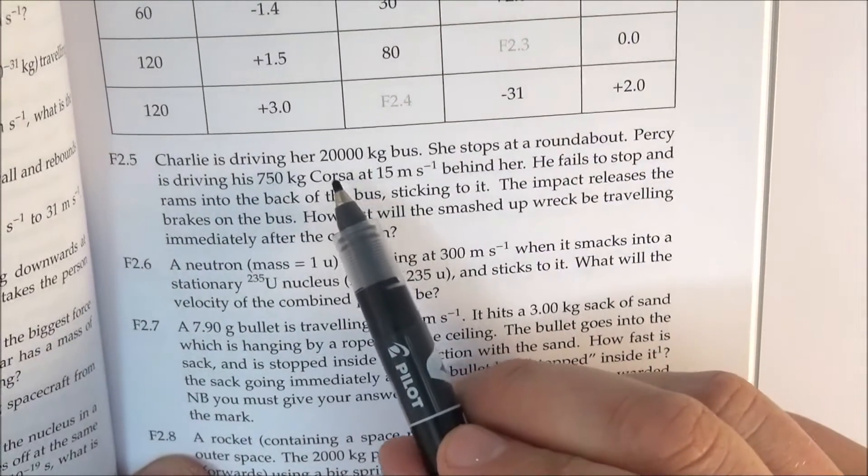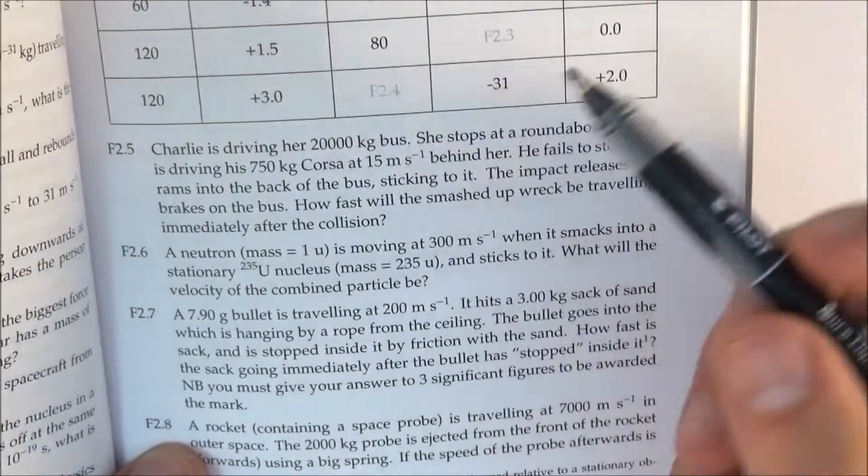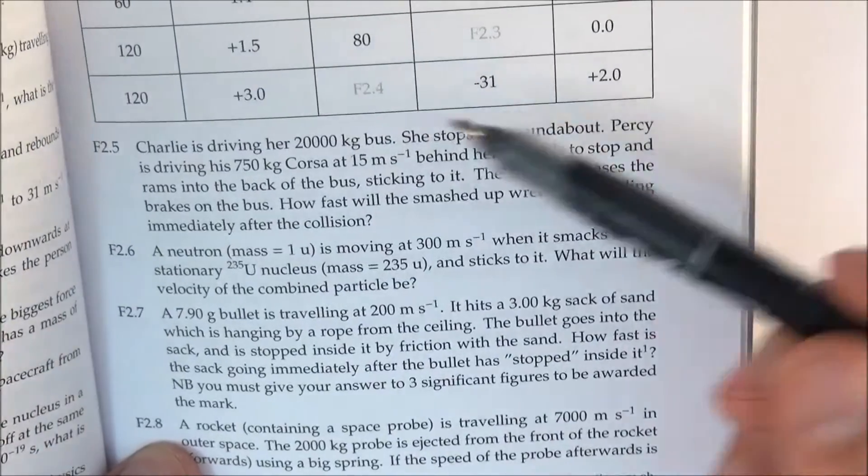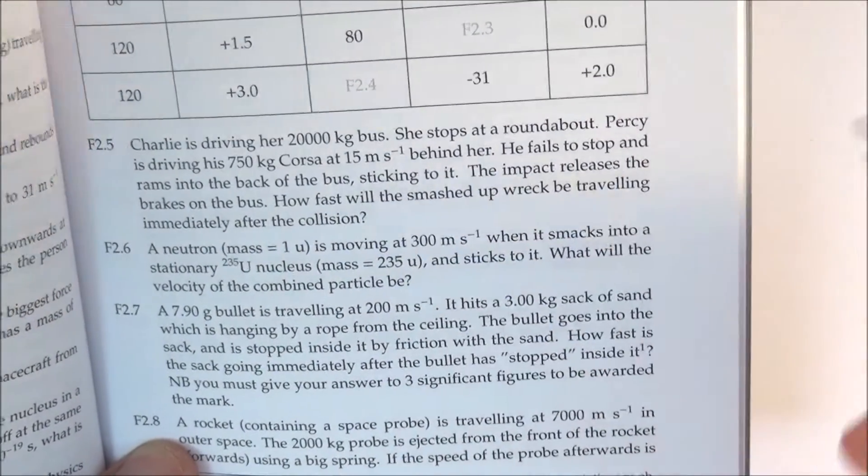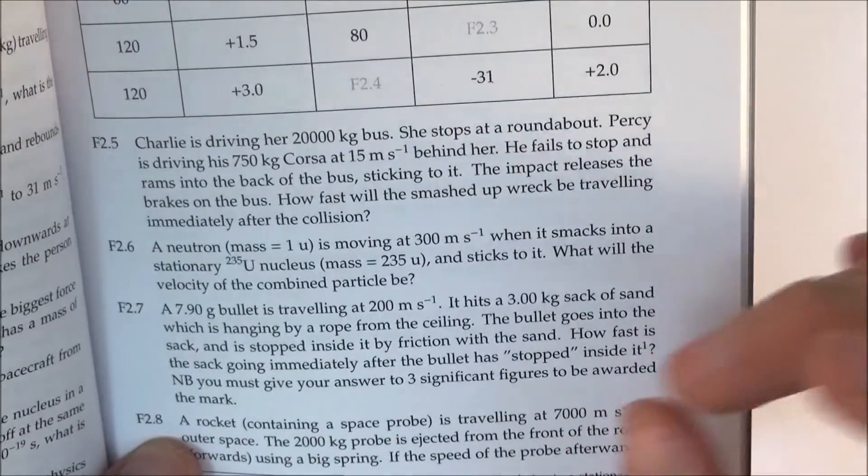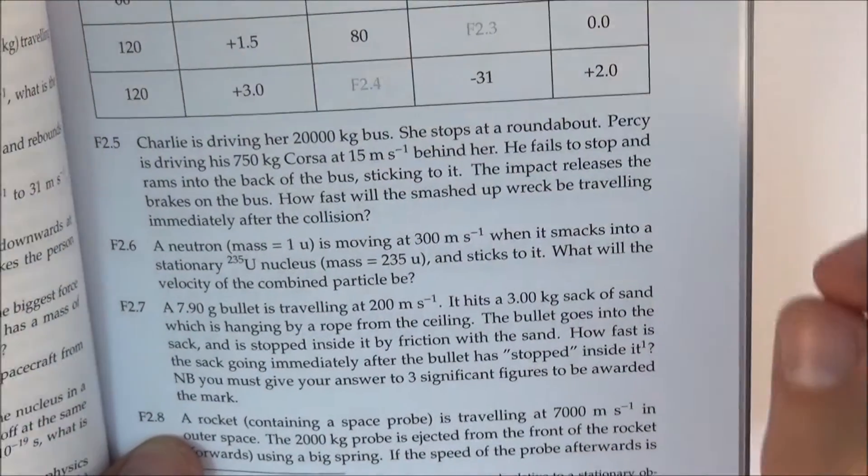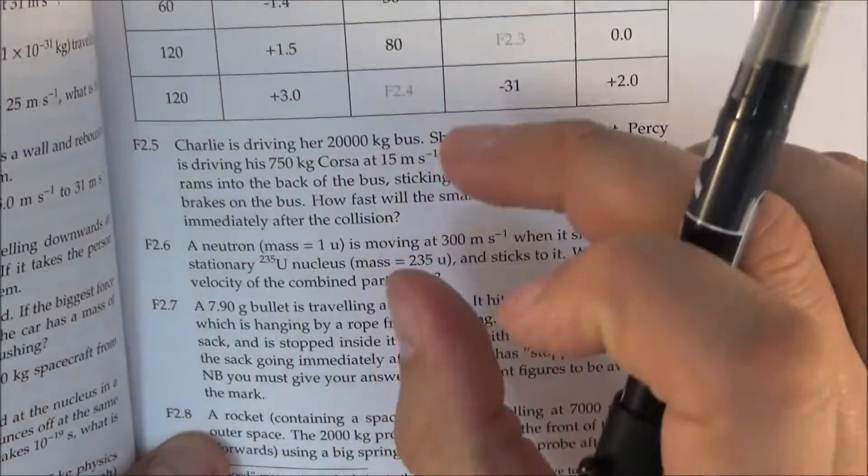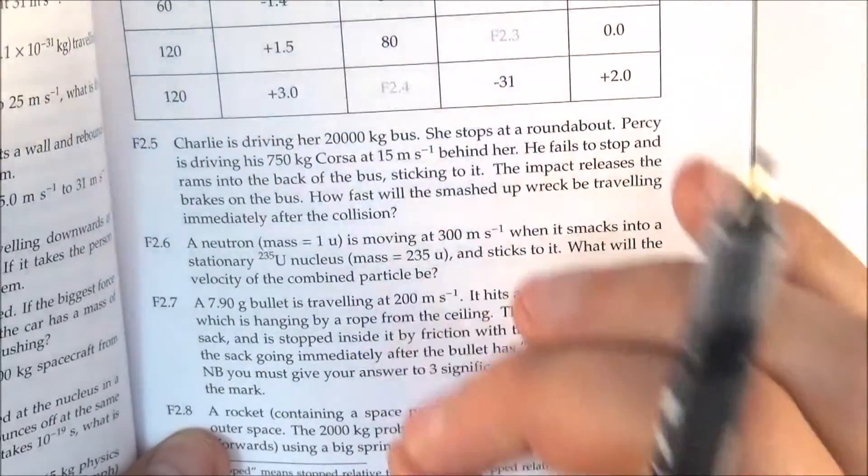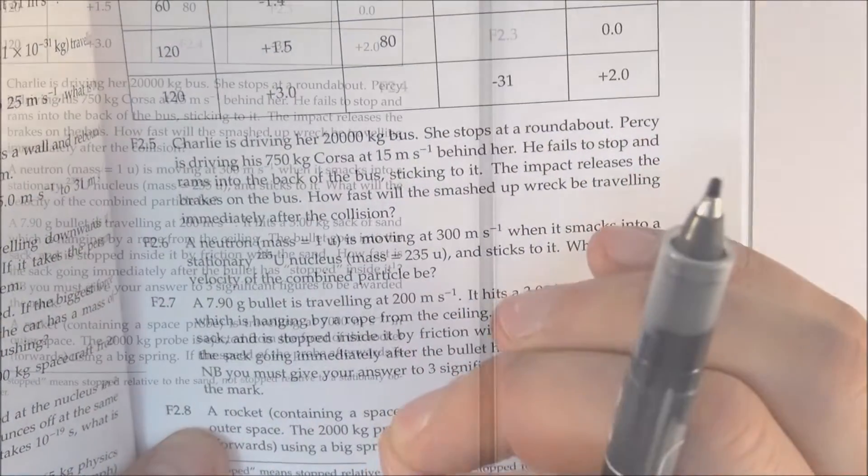It's about Charlie driving her 20,000 kilogram bus. She stops at a roundabout. Percy is driving his 750 kilogram car at 15 meters per second. They have an impact and then the two things move off together. So how fast will the smashed up wreck be traveling after the collision? A very simple question to demonstrate how we should use significant figures.